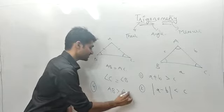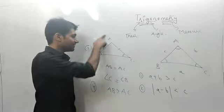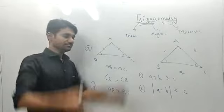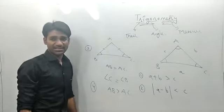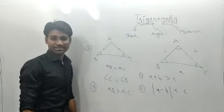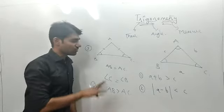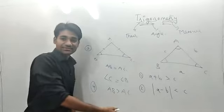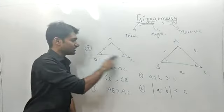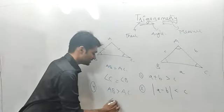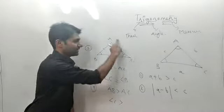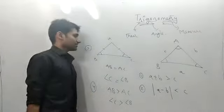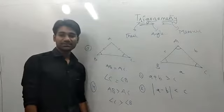If one side is greater than the other — say AB is greater than AC — then the opposite angle will also follow the same relation. AB's opposite angle is C, and AC's opposite angle is B. So angle C should be greater than angle B.